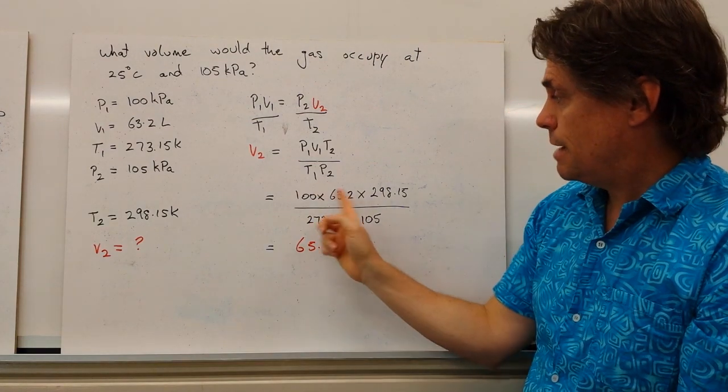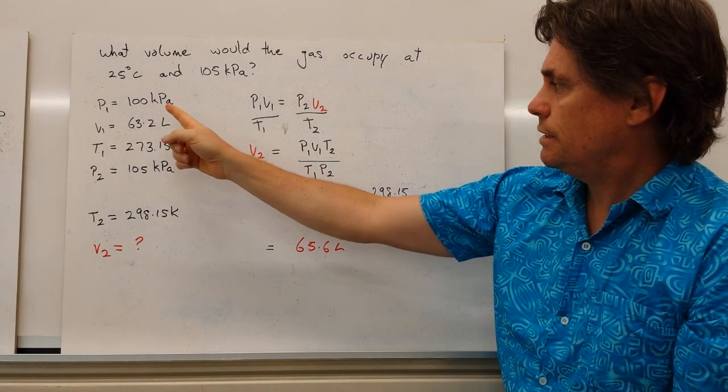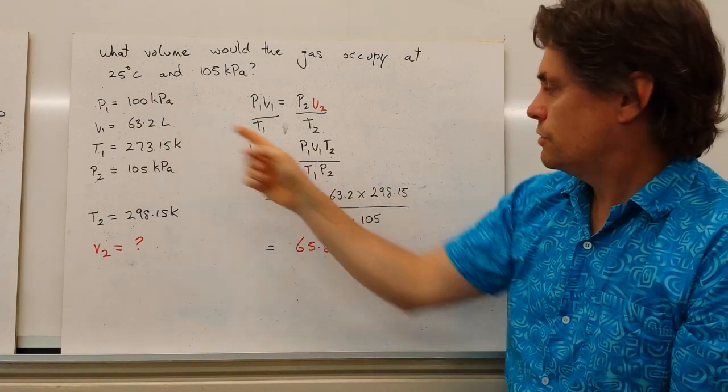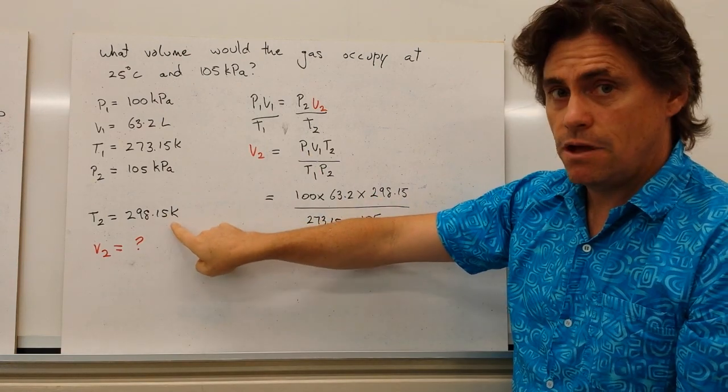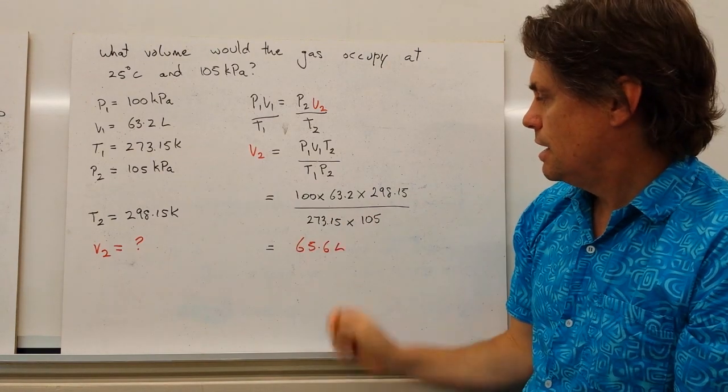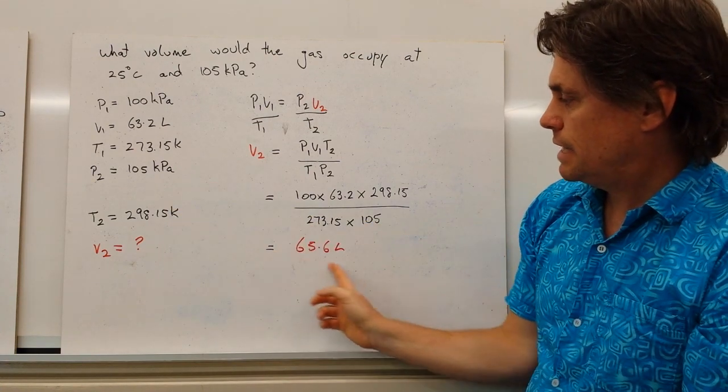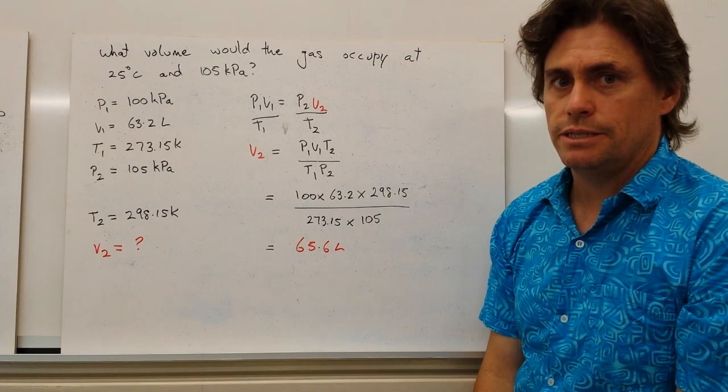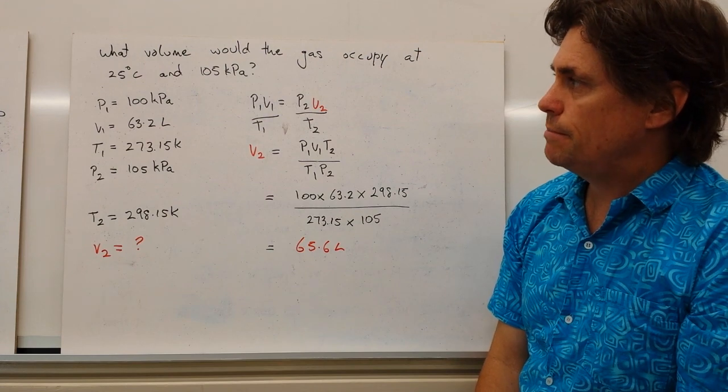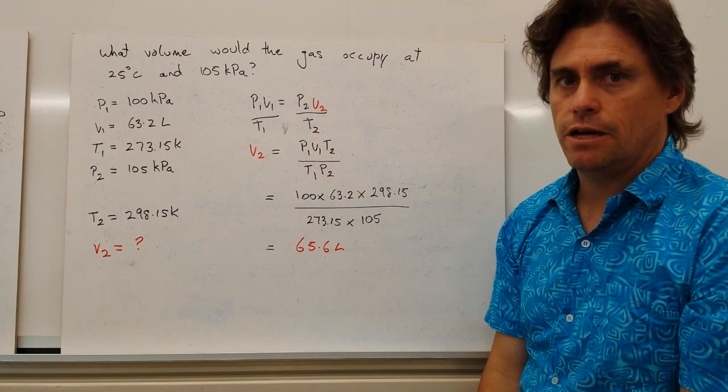And we then put our numbers in, and I've left out the units for the moment. We get 100 kilopascals being P1, our STP. 63.2 litres being our initial volume. 298.15 being our final temperature, because we need T2. 273.15 being our initial temperature. And 105 kilopascals being our final pressure. And this gives us a secondary volume of 65.6 litres. So this type of question is a combination of working out molar volume, and then changing the conditions to give us a final volume.